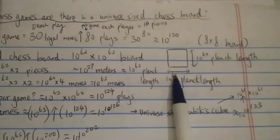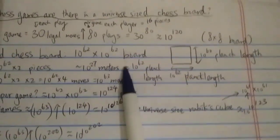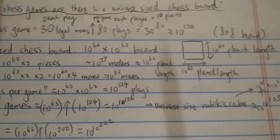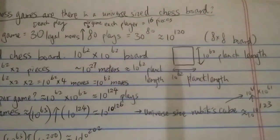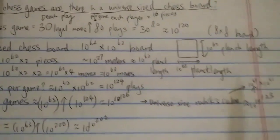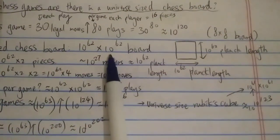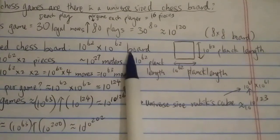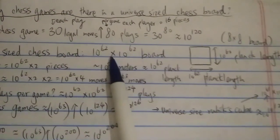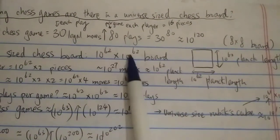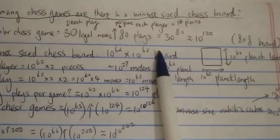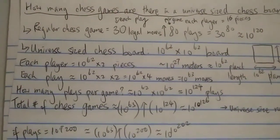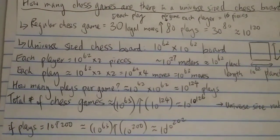Each square on the board is one Planck length — again, you cannot go smaller than that. That means a universe-sized board would have 10 to the 62 by 10 to the 62 squares. So it's a 10 to the 62 by 10 to the 62 board. How many chess games are there using this board?